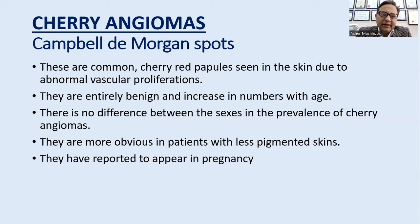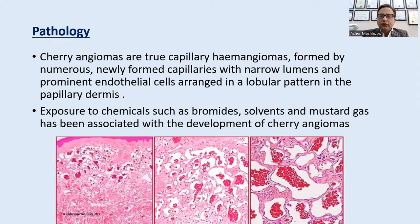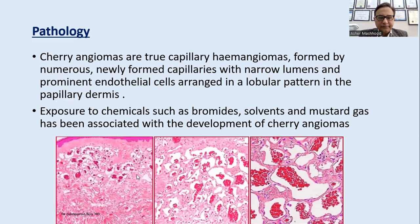Cherry angiomas, also called Campbell de Morgan spots, are common cherry-red papules seen on the skin due to abnormal vascular proliferation. They are entirely benign, increase in number with age, with no sex difference in prevalence. They are more obvious in patients with skin types 1 and 2, and appear to increase in pregnancy. Exposure to chemicals such as bromides, solvents, and mustard gas is associated with their development.